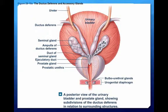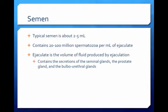Here you can identify the glands that secrete substances of semen. Locate the seminal glands, the prostate gland, and the bulbourethral glands. The typical semen is about 2 to 5 milliliters and contains a sperm count of about 20 to 100 million spermatozoa per milliliter of ejaculate. The ejaculate is the volume of fluid produced by ejaculation and contains the secretions of the seminal glands, the prostate gland, and the bulbourethral glands.